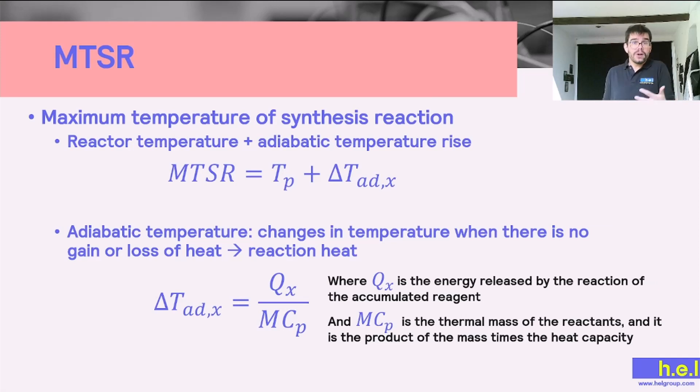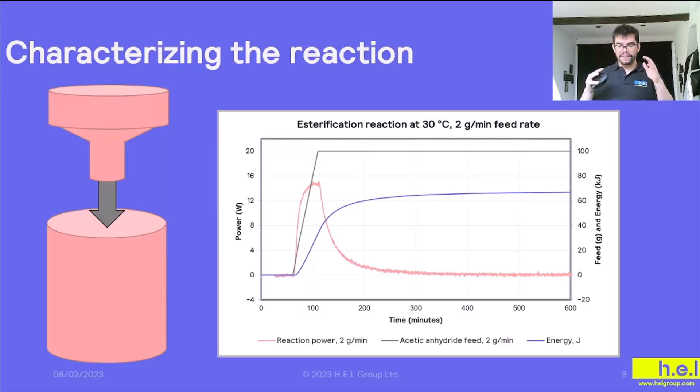So thankfully we can also calculate this value, and this is why calorimeters are so important, because thanks to them we can calculate the energy released by the reaction qx, but also the thermal mass of the reactants mcp - that's going to be the mass of the reactants times the specific heat of the compounds that we're going to be analyzing. So if we have an experiment, let's imagine this in which we're going to have a reactor that is going to be the cylinder that we can see in the slide, and this cylinder is going to be filled with compound B, then we can add compound A at a steady rate in order to make the reaction happen.